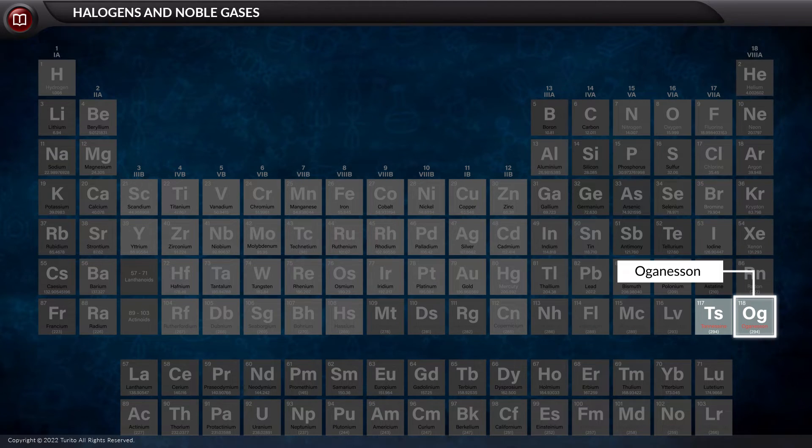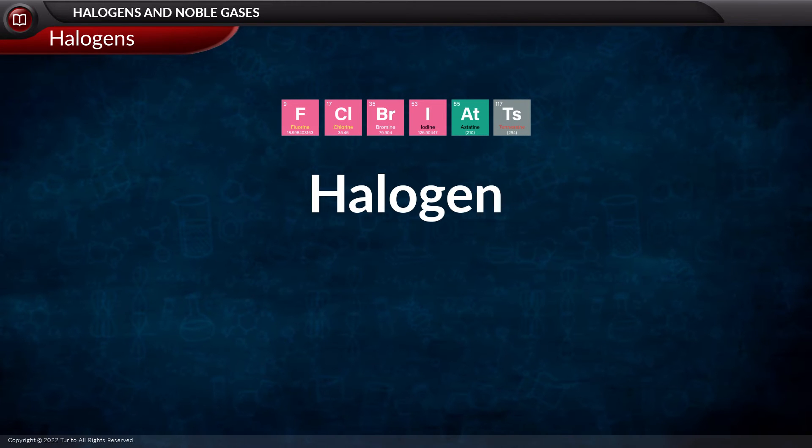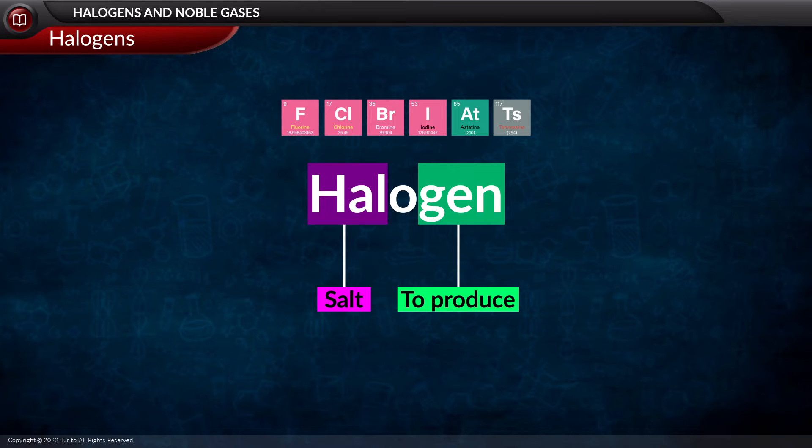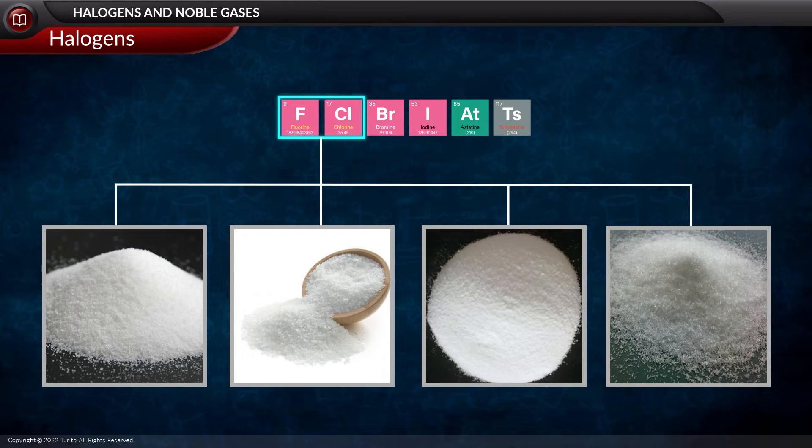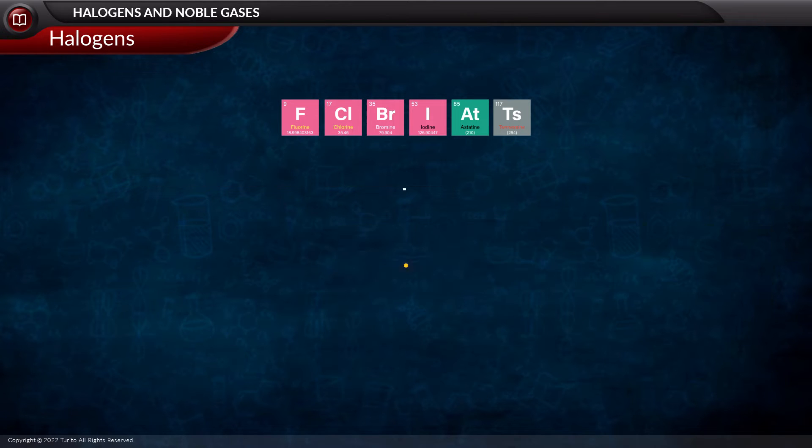Now you might wonder where does the word halogen get its name from. The word 'hal' means salt and 'gen' means to produce. For example, fluorine and chlorine produce salts with alkali and alkaline earth metals.